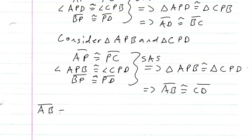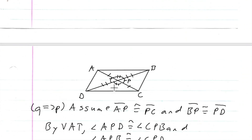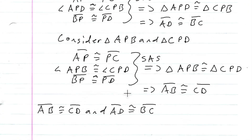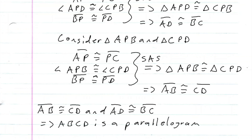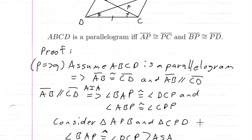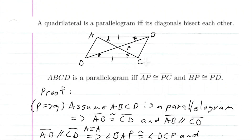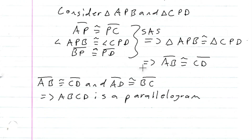We now have AB congruent to CD and AD congruent to BC, meaning the opposite sides of this quadrilateral are congruent. This implies ABCD is a parallelogram. So this is a very useful theorem: if the diagonals of a quadrilateral bisect each other, then the quadrilateral must be a parallelogram. And that is the proof.